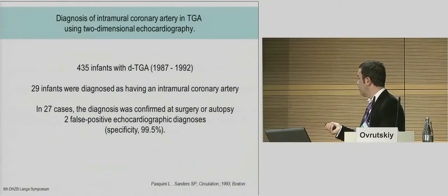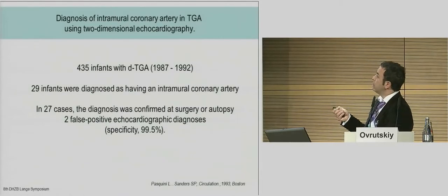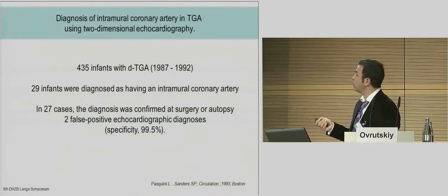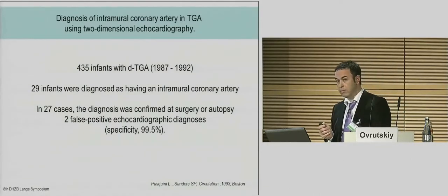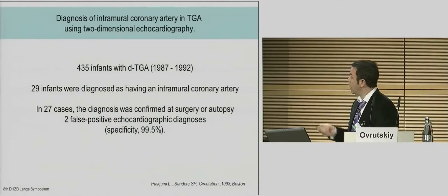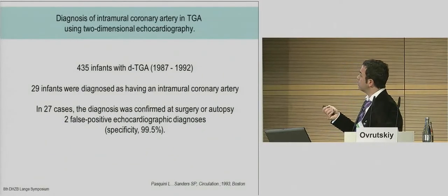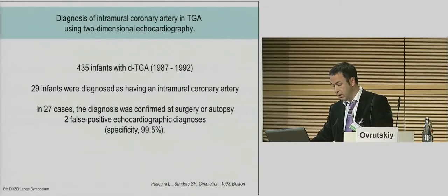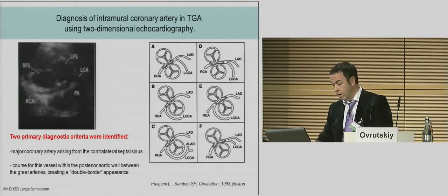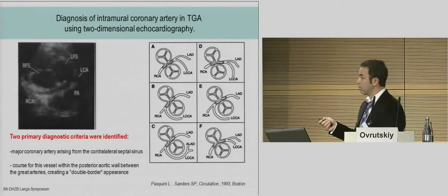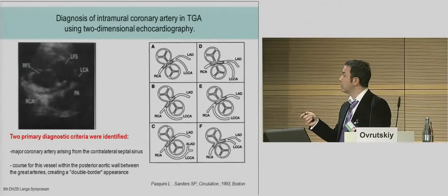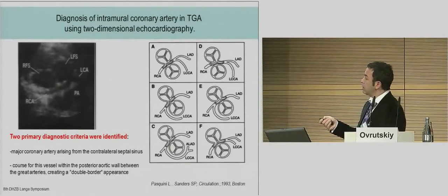This is a publication from 1993 from Boston. More than 400 infants with TGA were observed by echocardiography. In 29 of them, an intramural course of the coronary artery was found on echocardiography. In 27, the diagnosis was confirmed at surgery or at autopsy — we don't want that. Therefore, it is better to make the diagnosis before the operation. This echocardiography, performed 20 years ago, also showed that finding coronary arteries was possible.